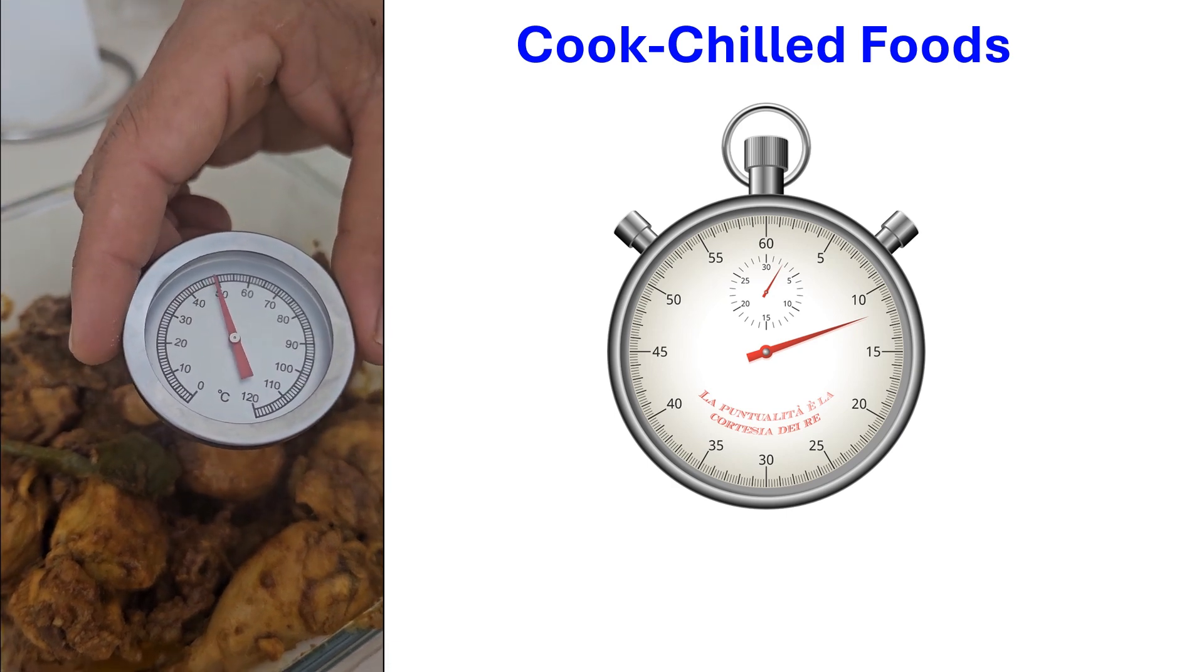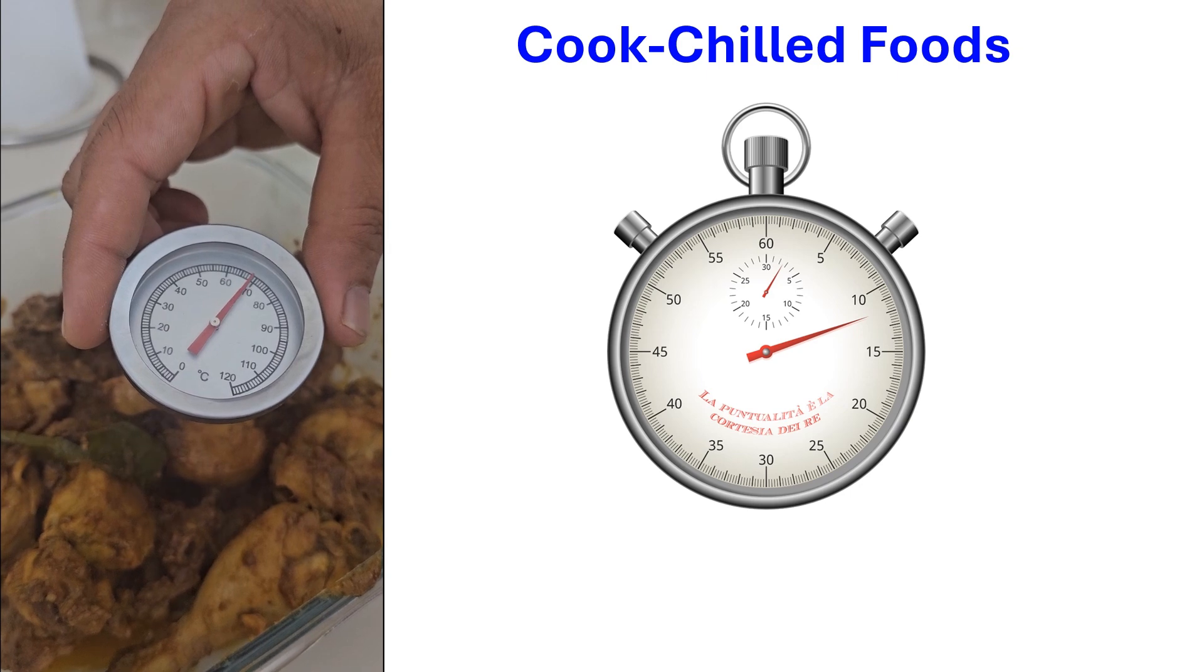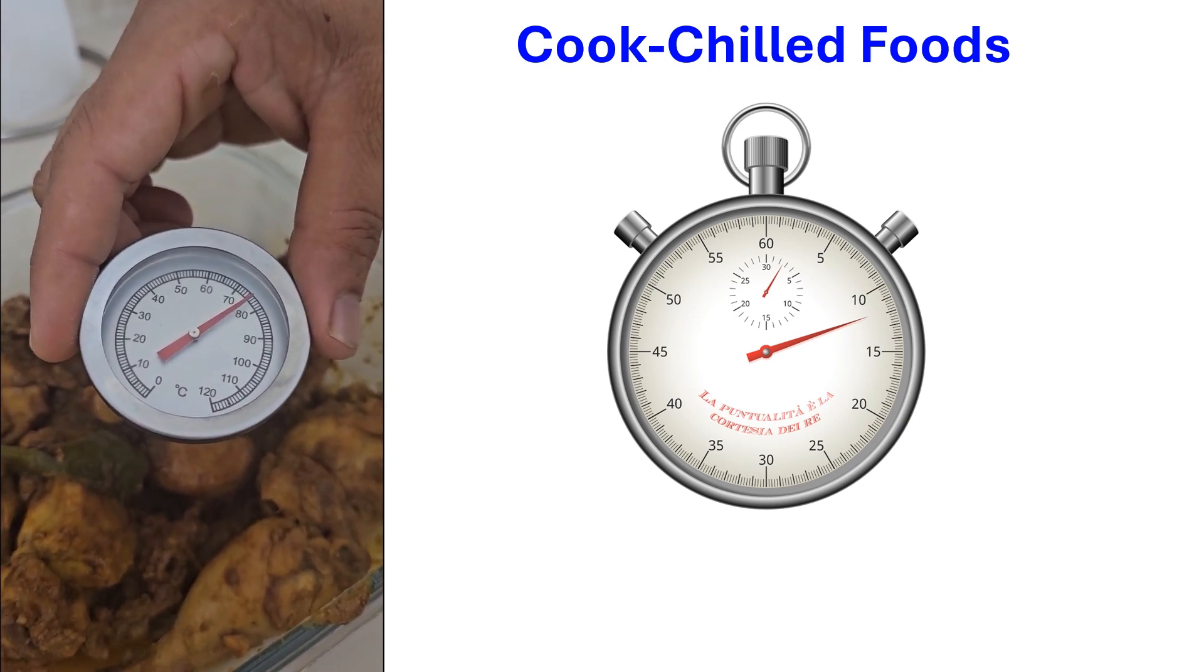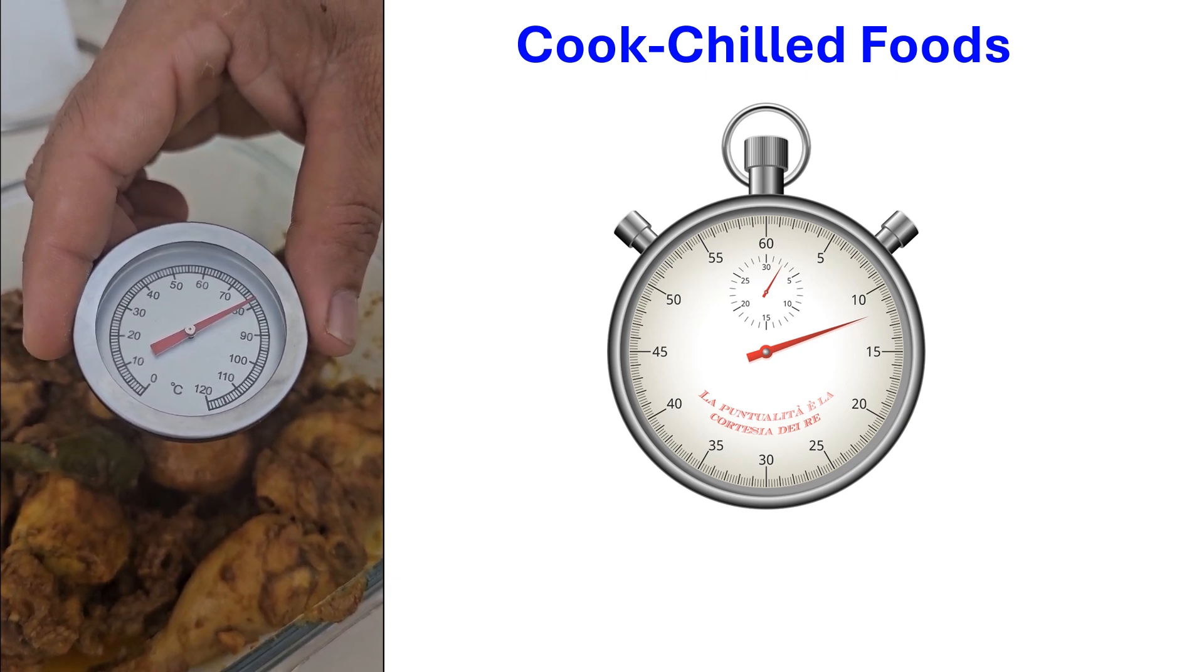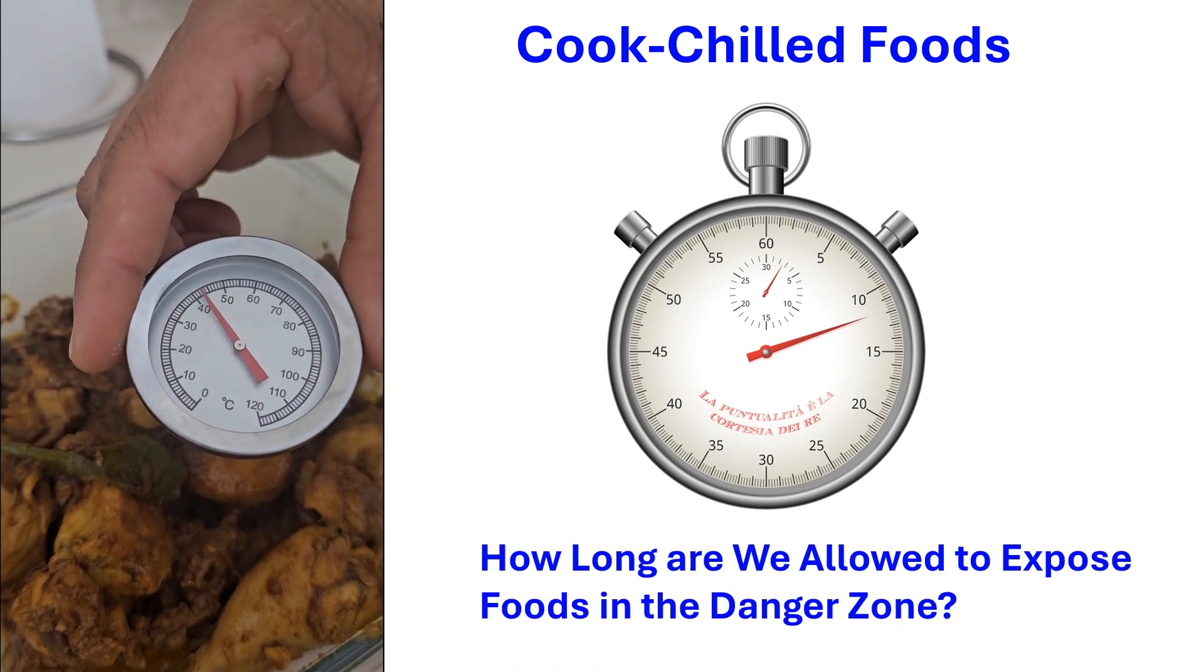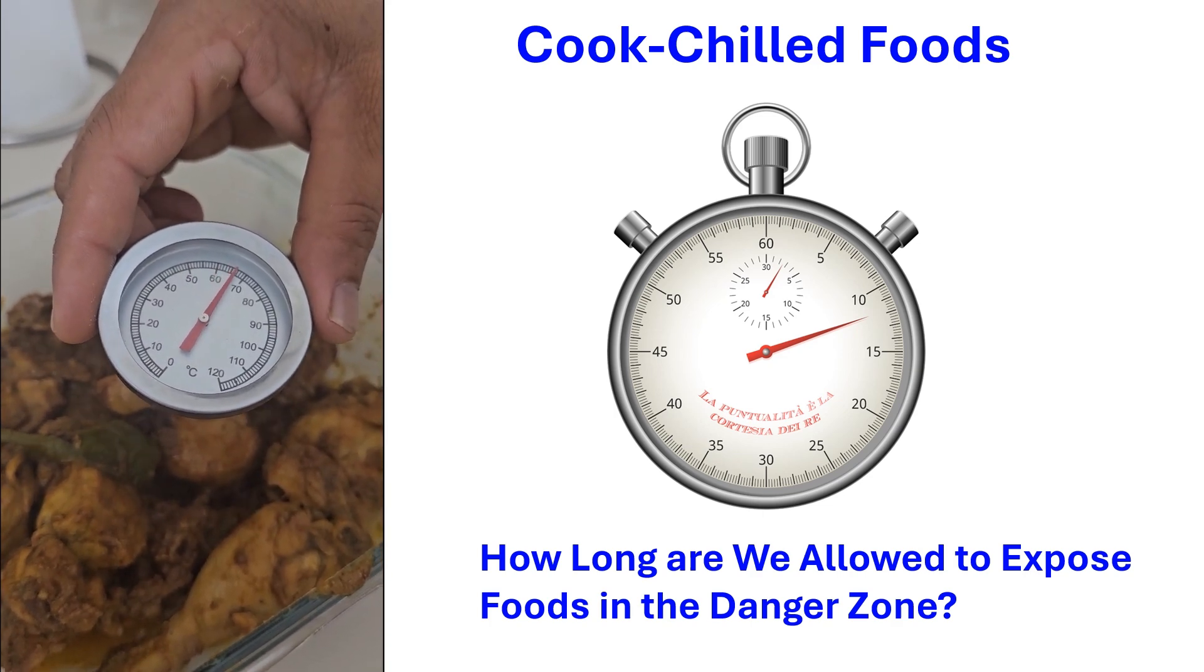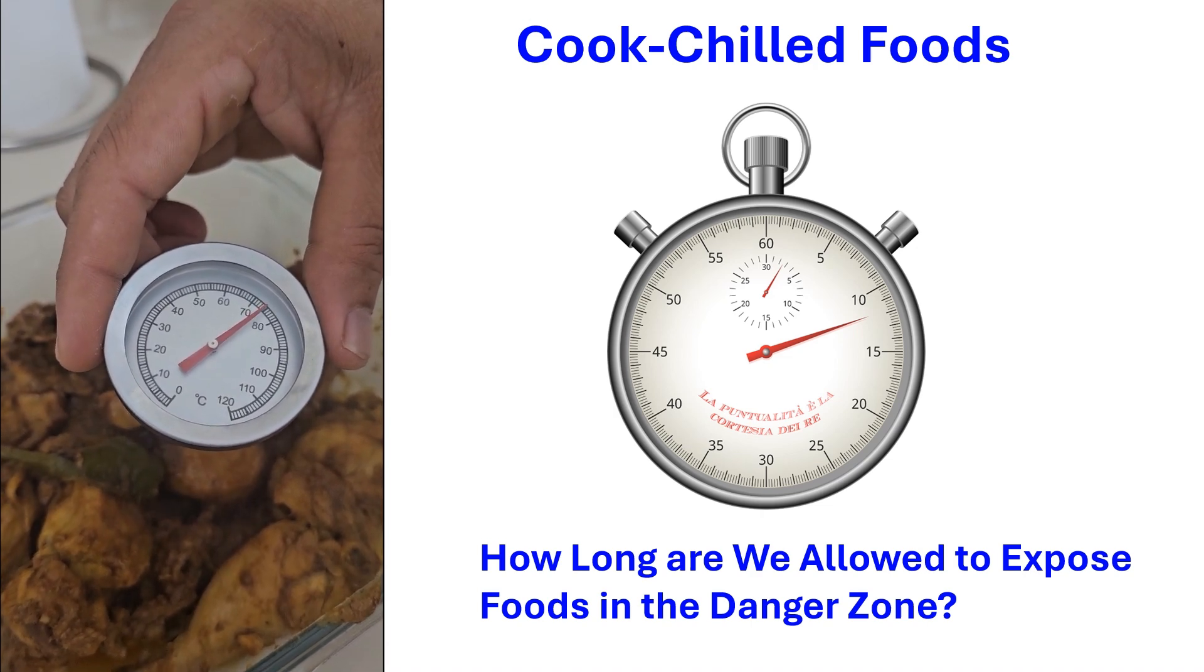In many cases, it may be difficult to avoid exposure in the danger zone. For example, cooked chill foods—we must cool it below 5 degrees C. After cooking, I checked what the temperature was; it was 80 degrees C. We cannot avoid the danger zone during cooling, but we could follow the guidelines. How long are we allowed to expose food in the danger zone?